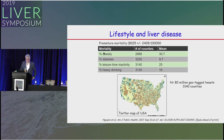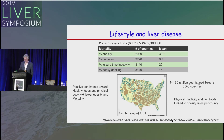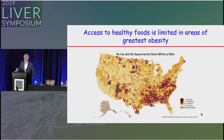Lifestyle and liver disease: analysis of 80 million tweets shows that in areas with positive sentiments towards healthy foods and physical activity, there are lower obesity rates and mortality. Conversely, physical inactivity and fast foods — particularly in the Deep South — are linked to obesity rates per county. Access to healthy foods is limited in areas of greatest obesity; in those areas there are many places with no car and no supermarket within a mile, with much higher rates of obesity.